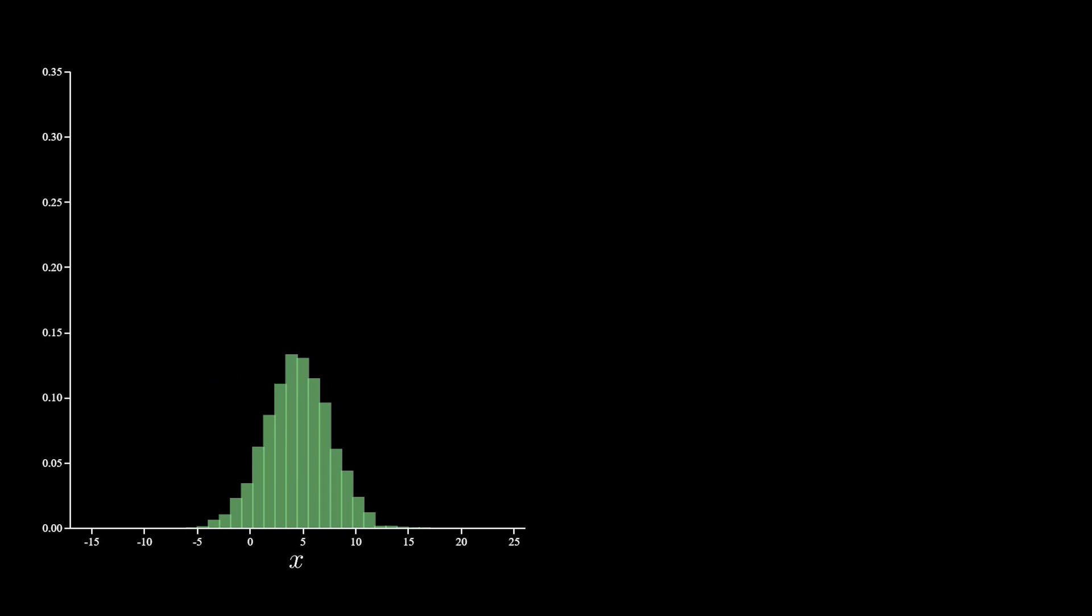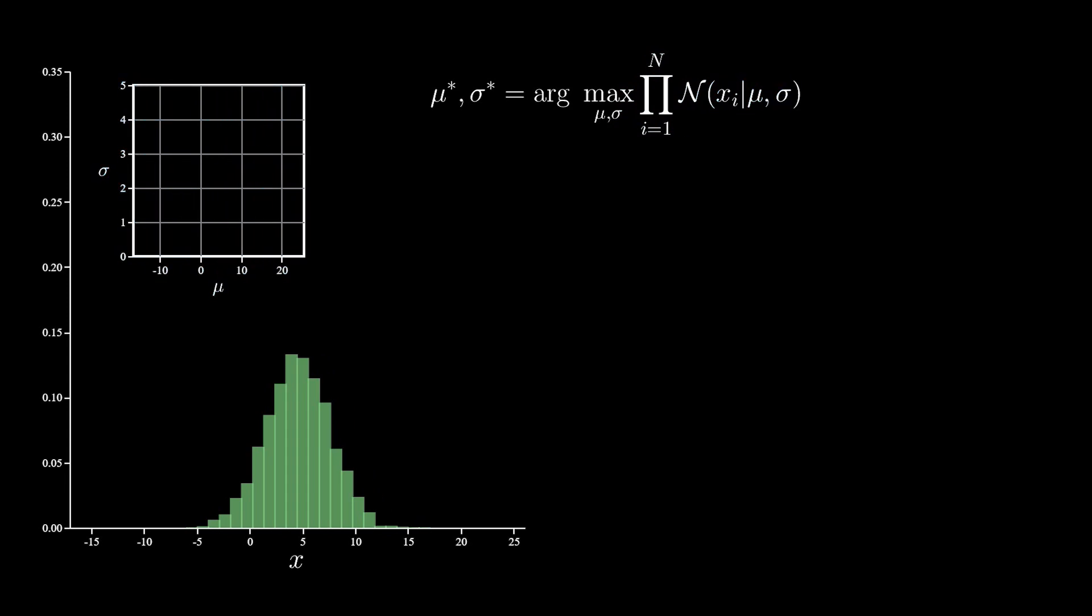Well, as you may already know, a very common approach is to pick the parameters that maximize the likelihood of this data. In the case of the normal, those parameters are the mean, called mu, and the standard deviation, called sigma. So that means we search for values, mu star and sigma star, that maximize the likelihood of our data. Nothing too crazy there, but we'll get crazy.